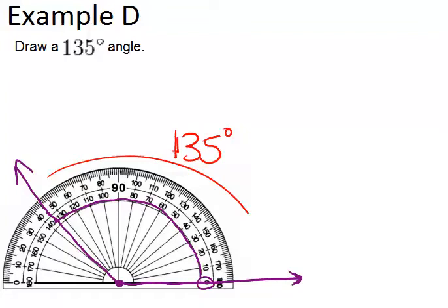That makes sense because it's clearly bigger than a 90 degree right angle, which it should be at 135 degrees. Hopefully you're feeling confident with measuring angles. Now try the guided practice and other problems on your own.